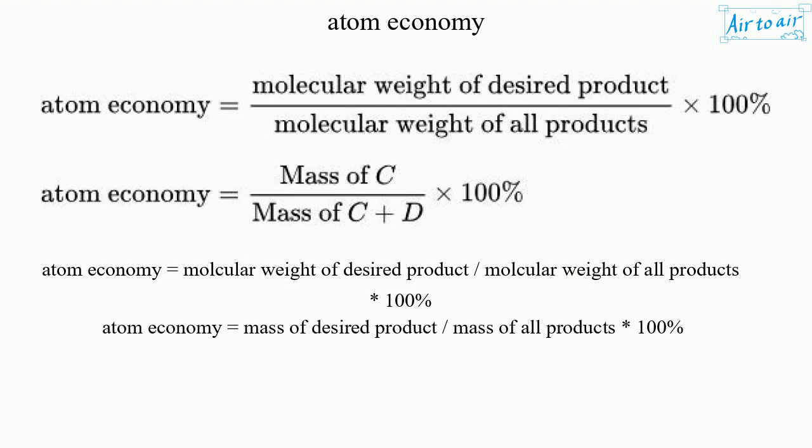Atom economy equals molecular weight of desired product divided by molecular weight of all products, multiplied by 100%. Atom economy equals mass of desired product divided by mass of all products, multiplied by 100%.